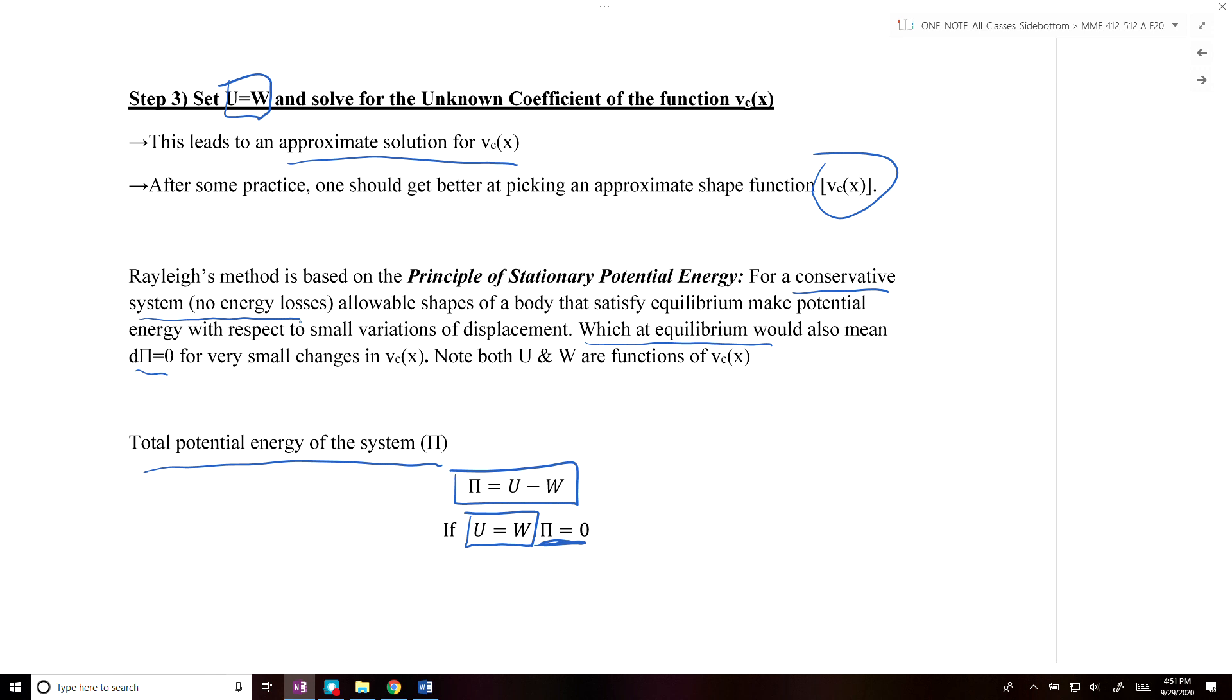So we set U equal to W, and then we solve for our unknown constant, which is typically represented by an A term or a delta term. We'll have a few example problems that will explain how you can apply Rayleigh's method for typical beam bending problems.